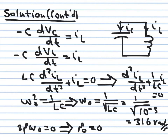We write: i_C = C·(dv_C/dt) = −i_L. Since v_C = v_L = L·(di_L/dt), we substitute to get: C·d/dt[L·(di_L/dt)] = −i_L, which gives LC·(d²i_L/dt²) + i_L = 0. Dividing both sides by LC to get the standard form: d²i_L/dt² + (1/LC)·i_L = 0. This matches d²x/dt² + ω₀² x = 0 with ω₀² = 1/LC.